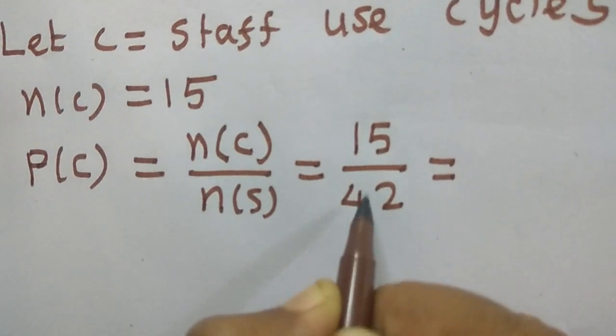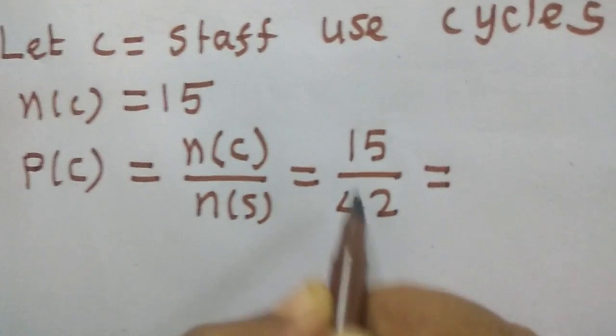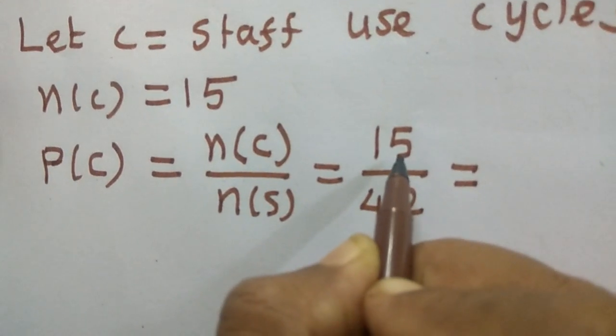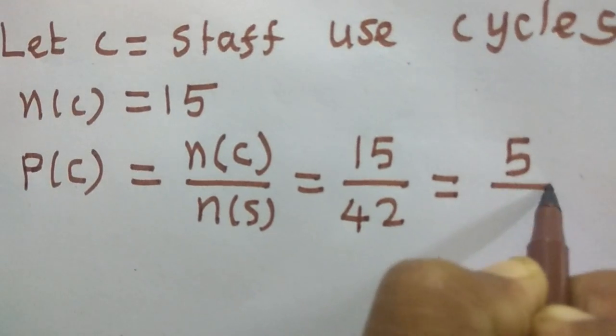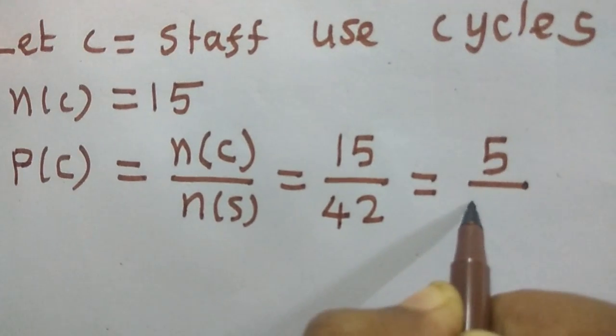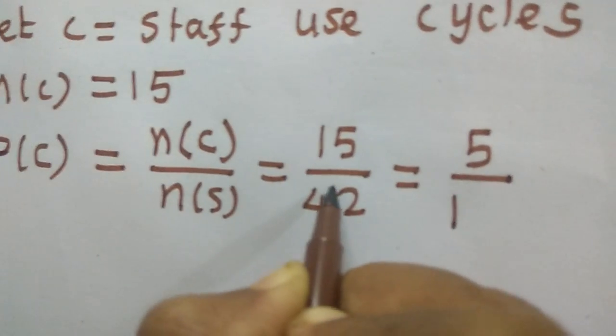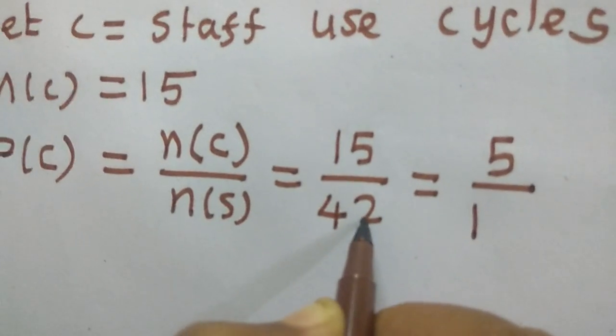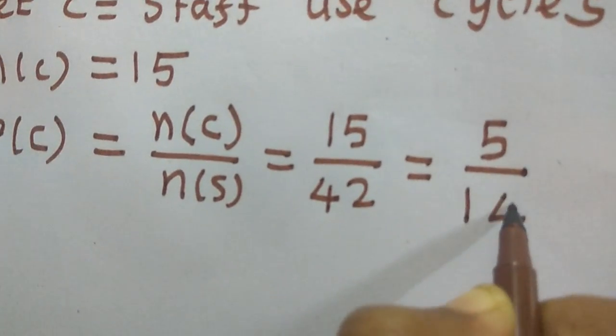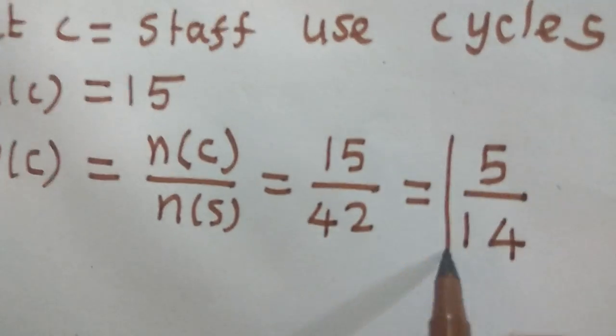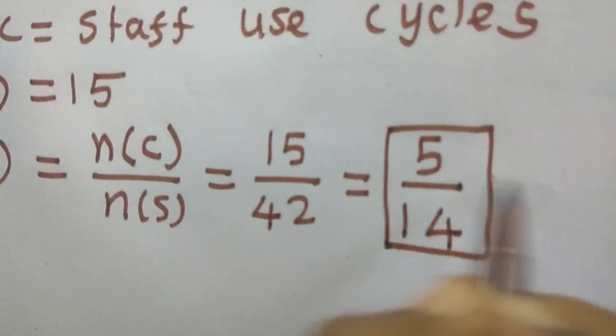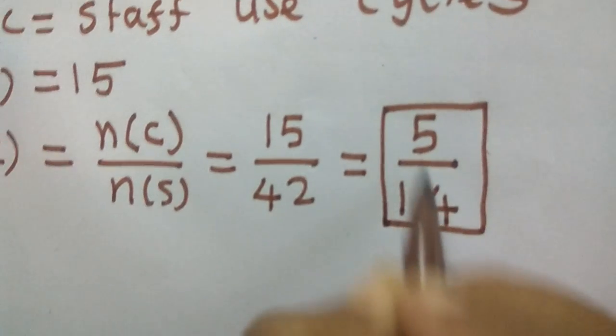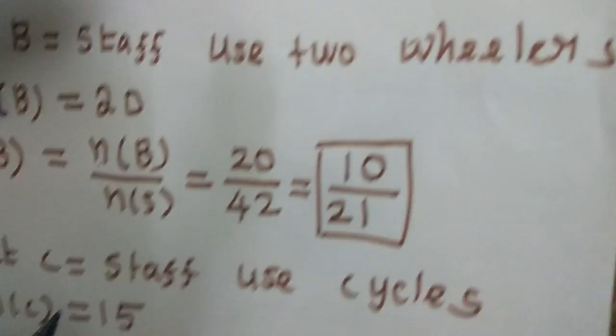Now you have to reduce these two. Just see the multiplication table. 2 you won't be able to take, so 3. 5 times 3 is 15, 1 times 3 is 3. Reminder 1. So 12. 4 times 3 is 12. So 5 by 14. Further will you be able to reduce? No. So just I am stopping up to this.